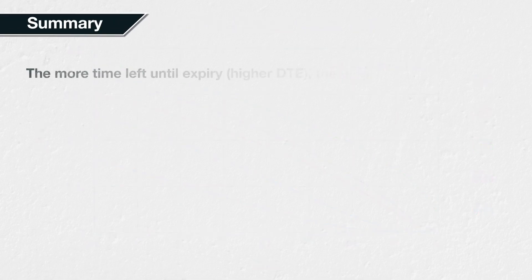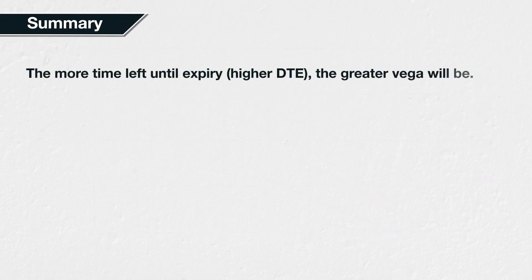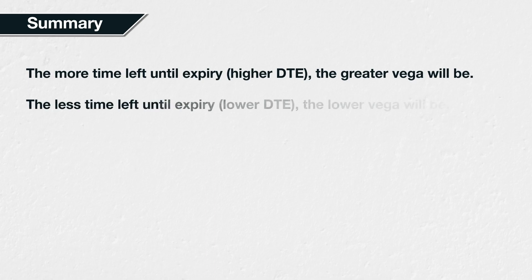In summary, the more time is left until an option expires, the more extrinsic value it will have, and any changes to implied volatility will have a larger effect in dollar terms to the option premium. The higher the days to expiry, the higher the vega; the lower the days to expiry, the lower the vega. This is true for all strikes.